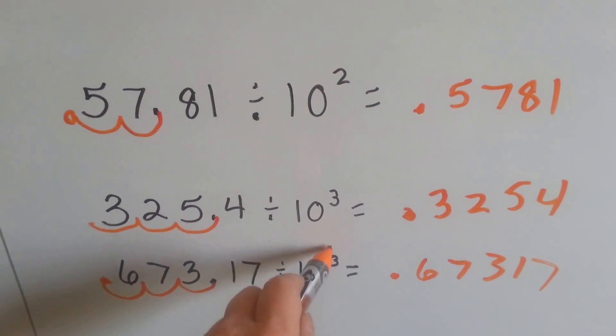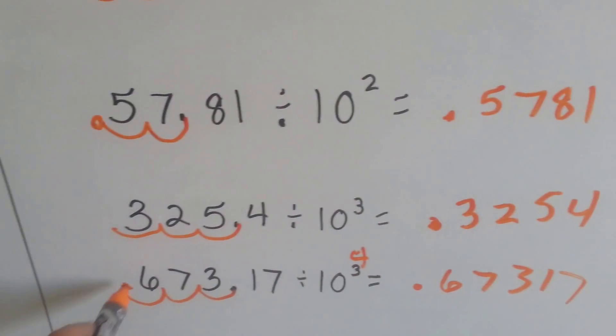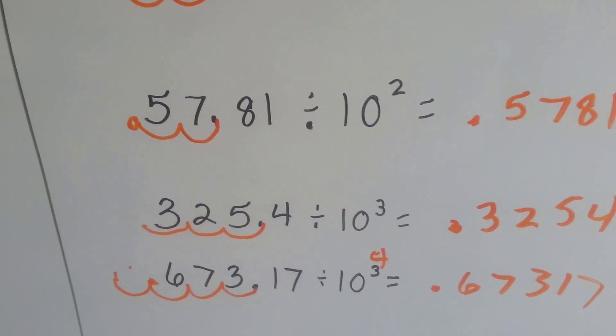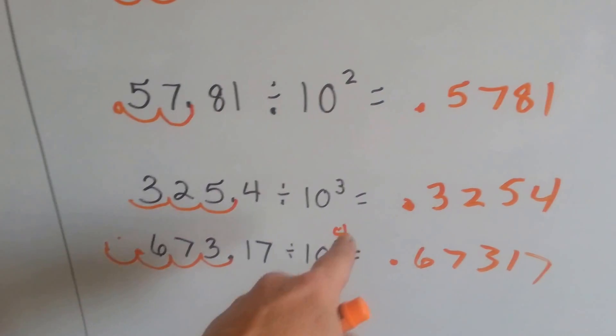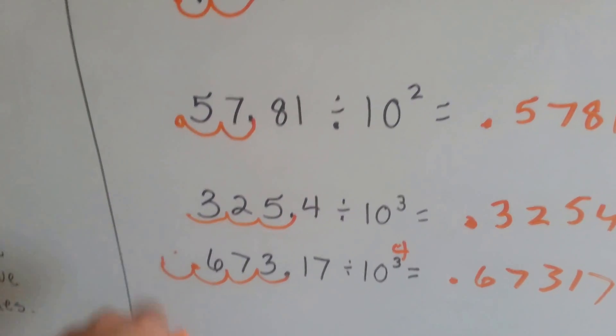And if it had said 10 to the fourth here, we would have hopped another time and we would have put a zero there, wouldn't we? And if it said 5, we would have hopped another time and put two zeros there.